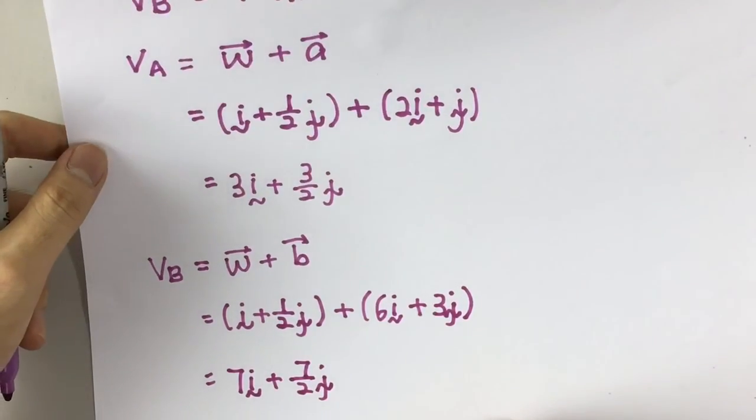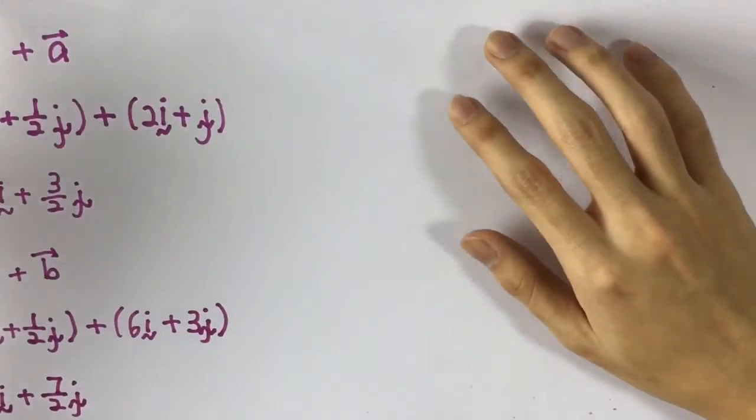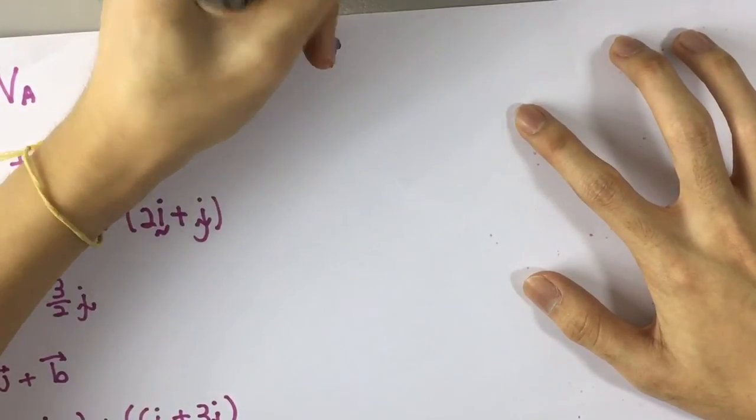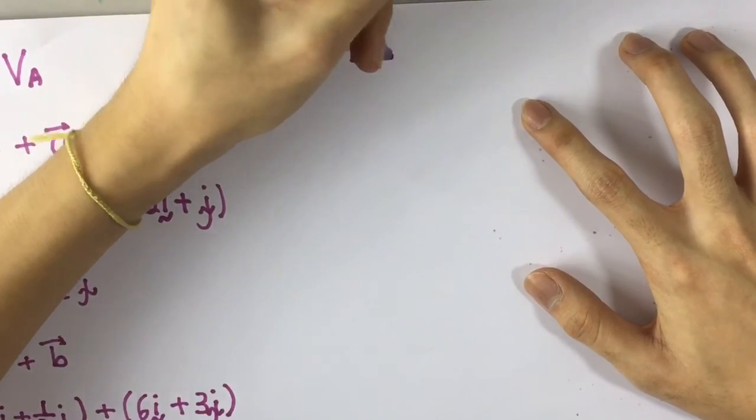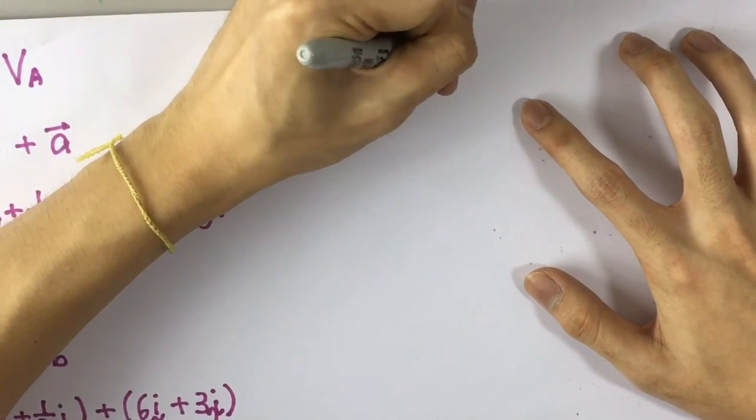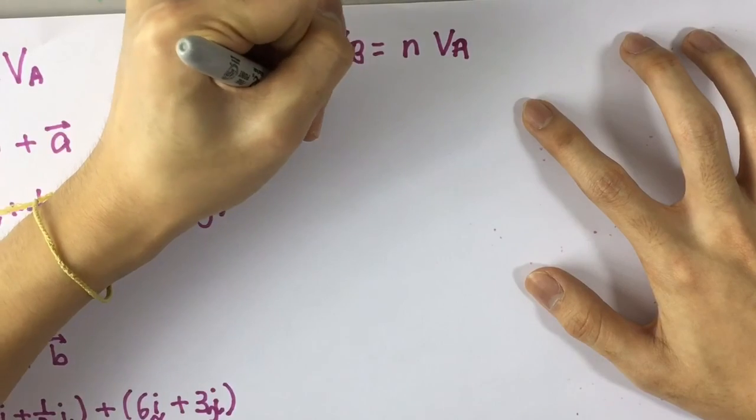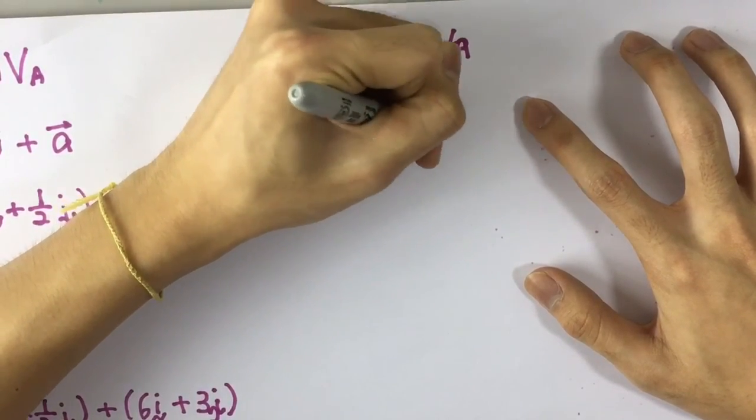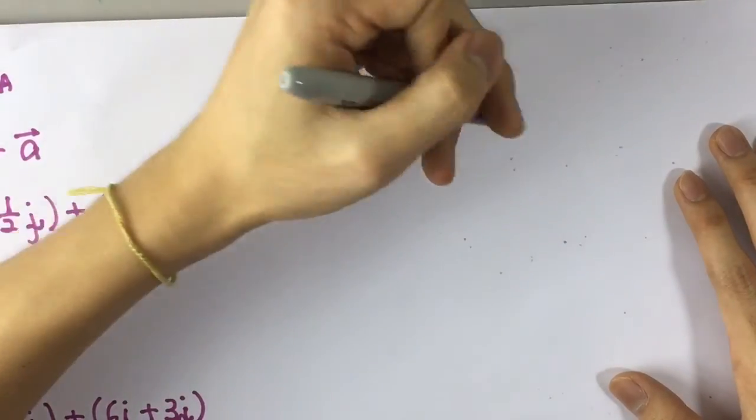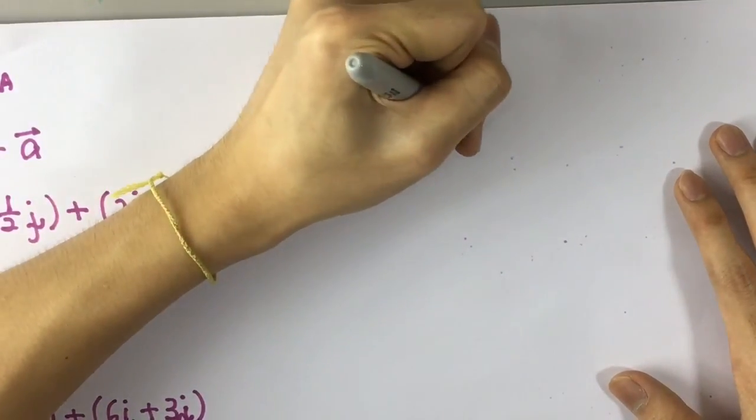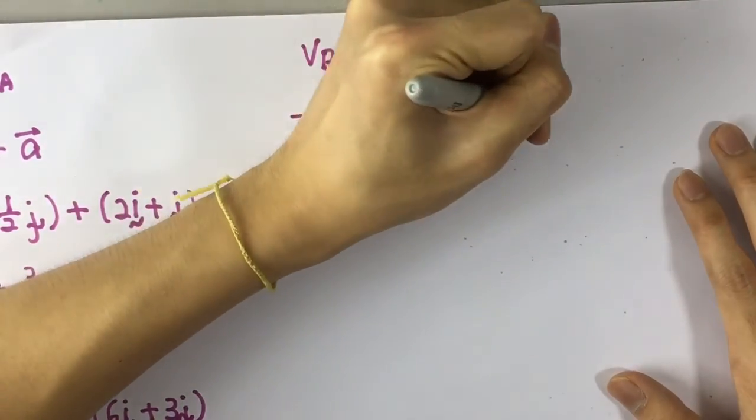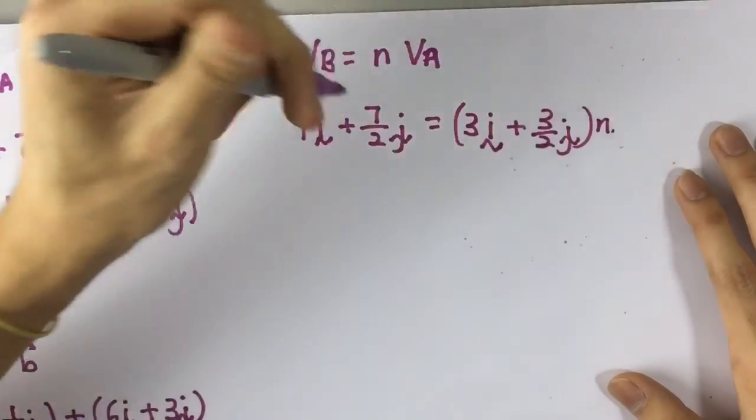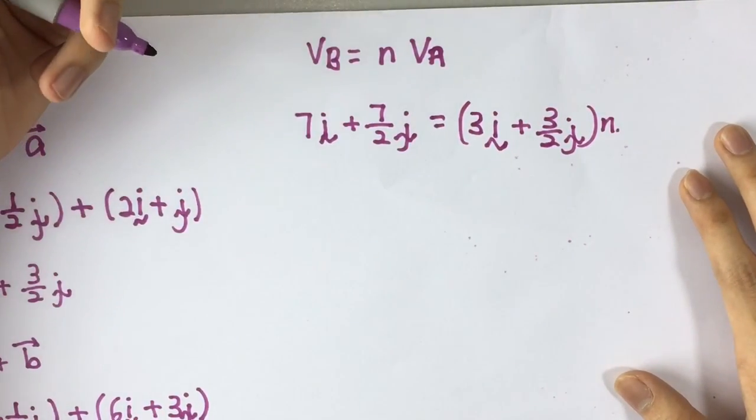Alright, now you have both velocities. What should you do now? So using this formula again, VB equals to N times of VA. So, 7I plus 7 over 2 J equals to 3I plus 3 over 2 J times N. Alright, so what you can do is...